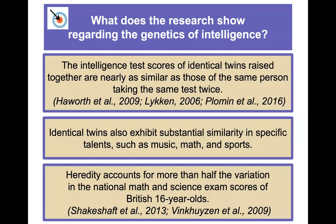What does the specific research regarding the genetics of intelligence show? The intelligence test scores of identical twins raised together are nearly as similar as those of the same person taking the test twice. Think about that — identical twins, those monozygotic twins who are the same genetically, when they take an IQ test, their scores are almost as similar as if it's the same person taking the test two times.